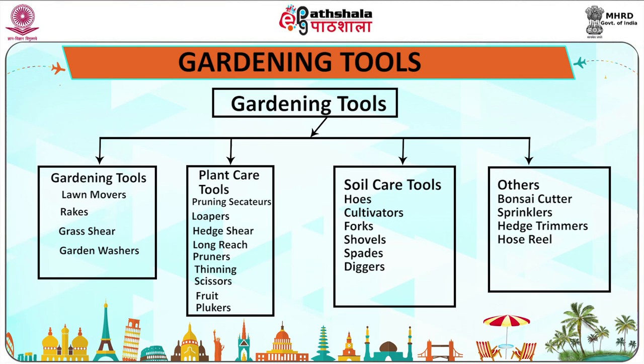Various tools must be used by the gardener — these are called gardening tools. Gardening tools may be divided into four parts. First are the lawn care tools, which include lawn mowers, rakes, grass shears and garden washers. Second are the plant care tools, which include pruning secateurs, lopers, hedge shears, long reach pruners and fruit pluckers. Third are the soil care tools, which include hoes, cultivators, forks, shovels, spades and diggers. Fourth are other tools such as bonsai cutters, sprinklers, hedge trimmers and hose reels.